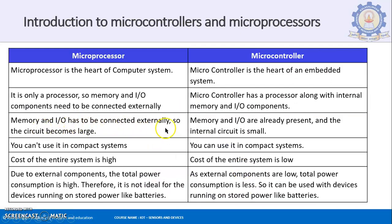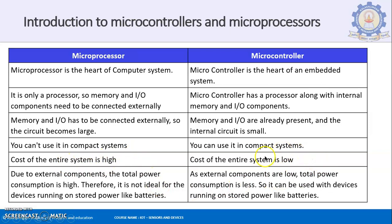In a microprocessor, memory and IO have to be connected externally, so the circuit becomes larger. In a microcontroller, memory and IO are put inside the chip, so the internal circuit is small — that is the advantage. Because external devices are connected to the microprocessor, you cannot use it for compact systems. Whereas with a microcontroller, you can use it for compact, small area systems. The cost of a microprocessor-based system is very high because it does multiple functions, but with a microcontroller, which does only a single function, the cost is entirely lower.